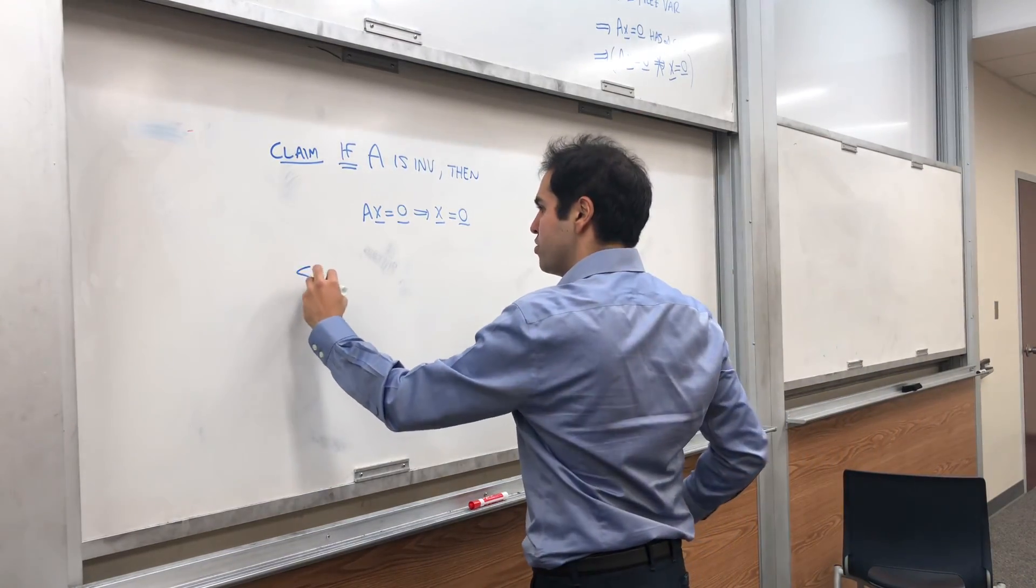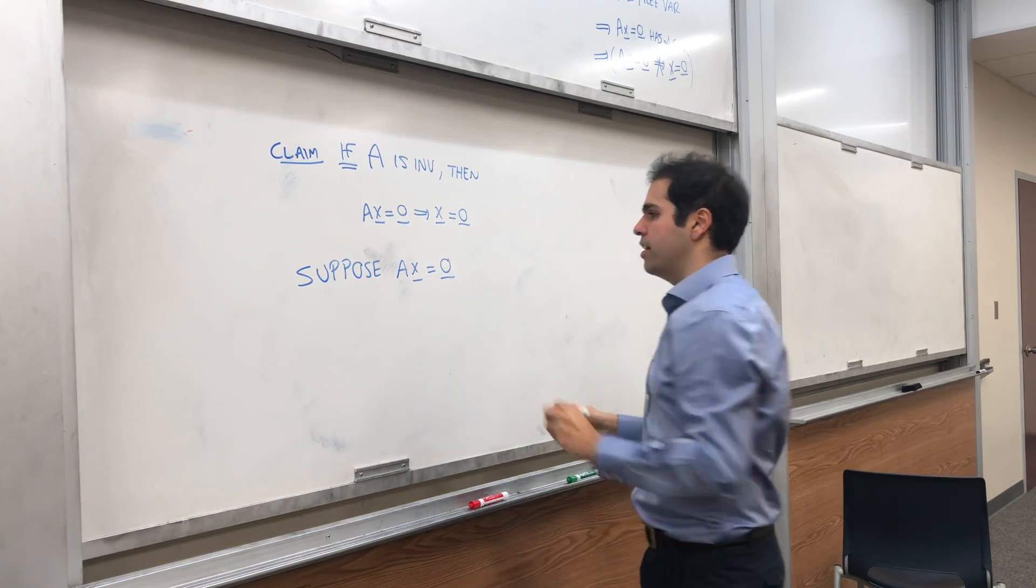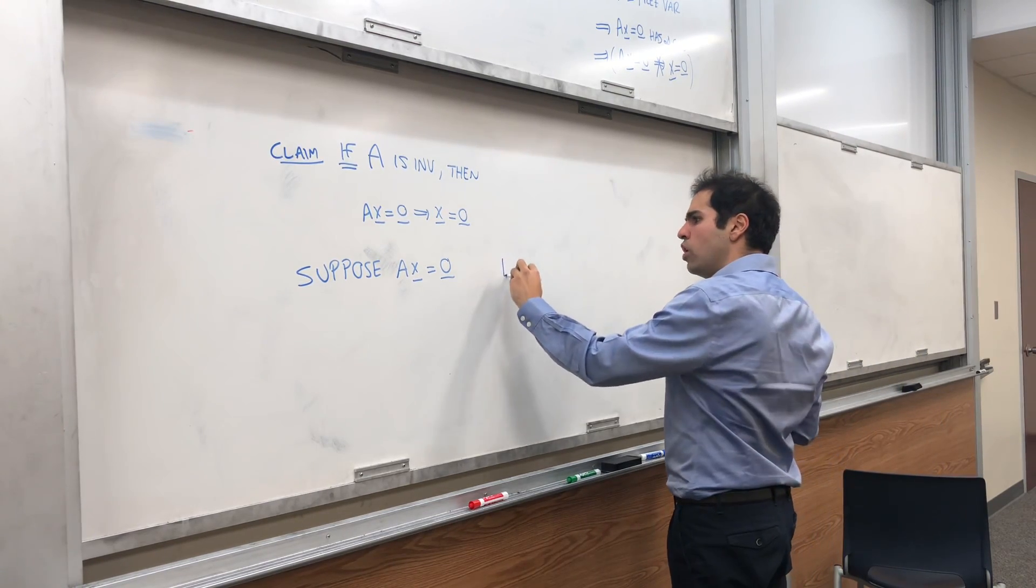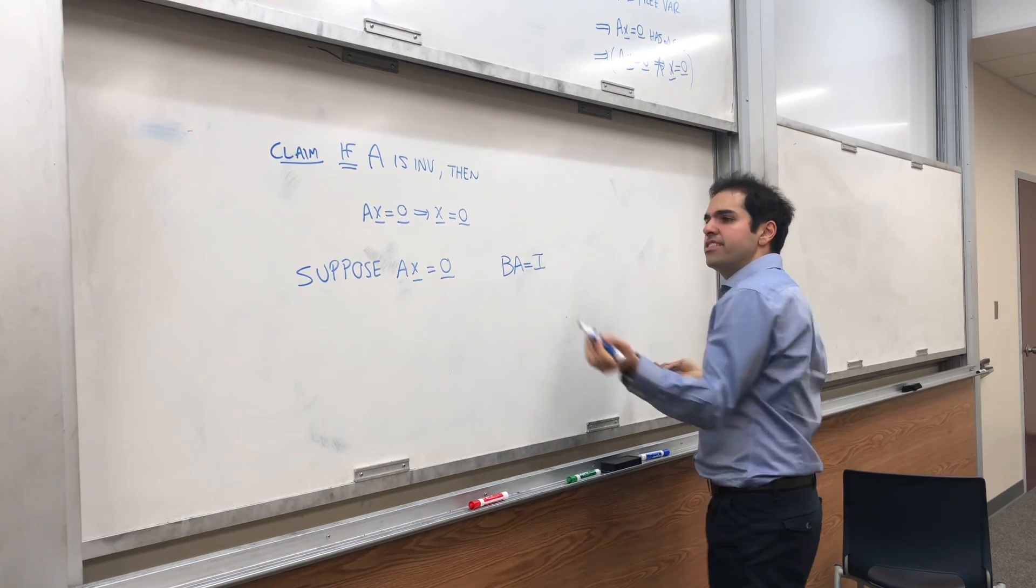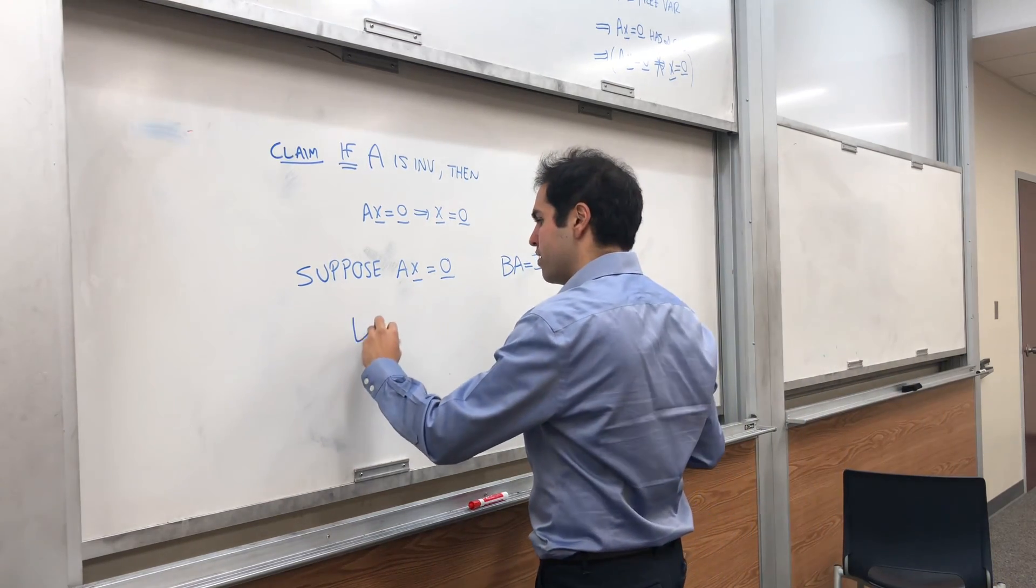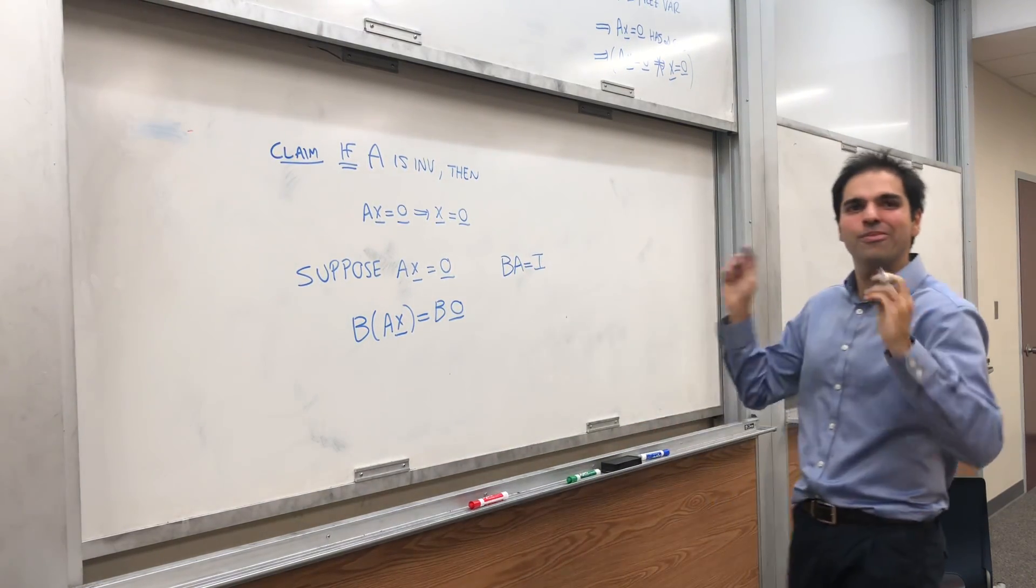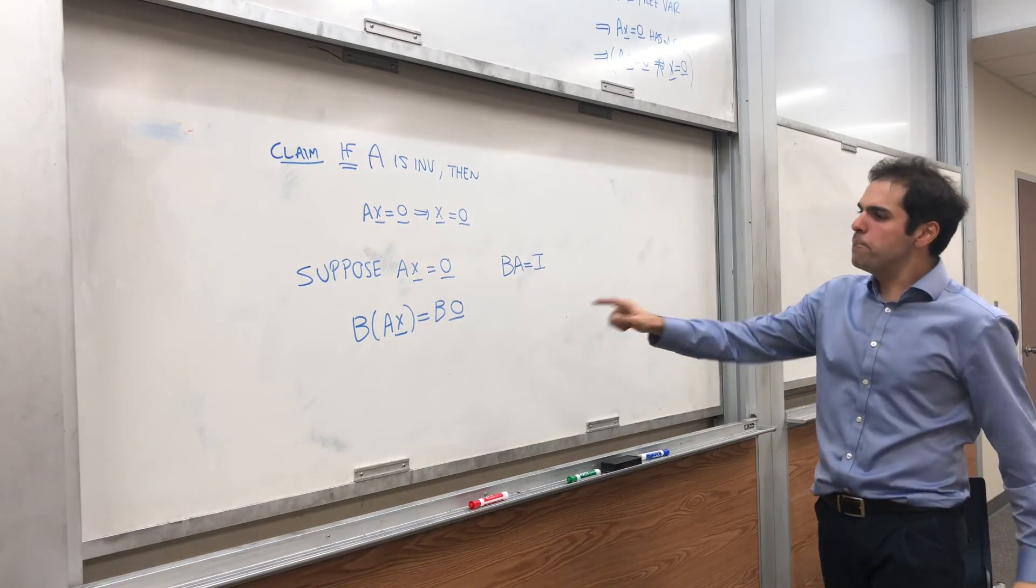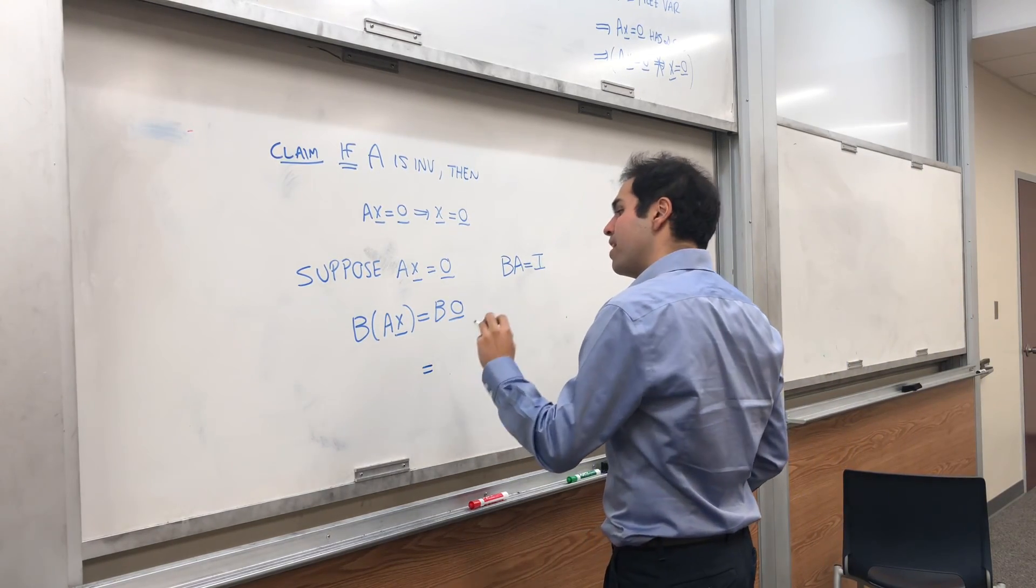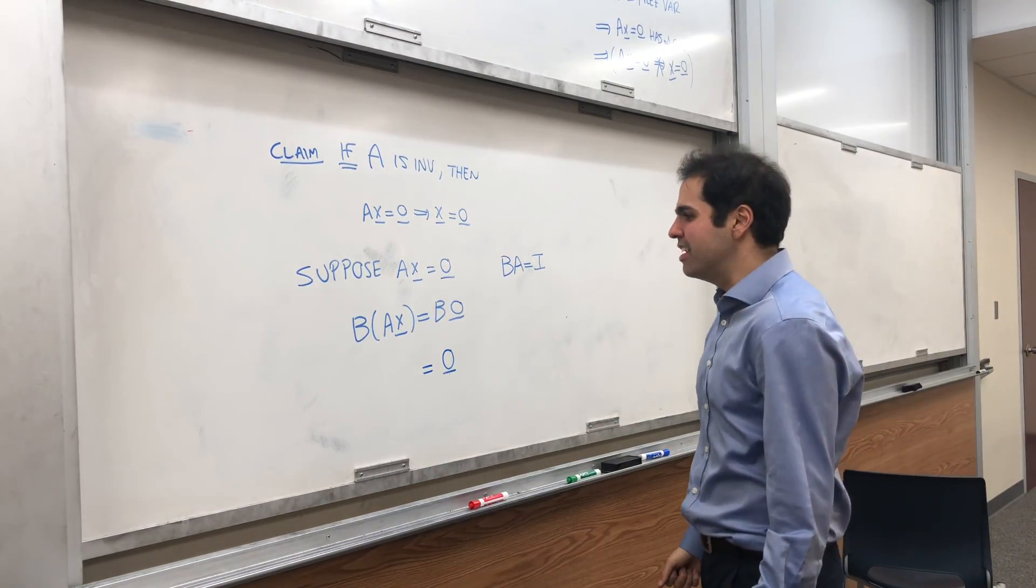And let me show you why this is a problem. Let me show you that if A is invertible, Ax equals 0 must have just a trivial solution. So, claim, if A is invertible, then Ax equals 0 implies x equals 0. So A must just have the trivial solution. Here's why. Suppose Ax equals 0. Remember what it means for A to be invertible. In particular, you know there's a matrix B such that BA is the identity. So let's take this equation and multiply by B to the left. Then BAx is B0. B0, if you apply B to the 0 vector, you get the 0 vector.